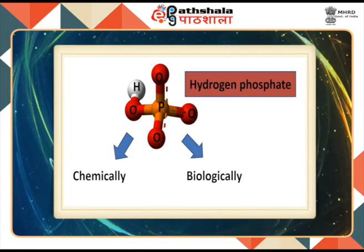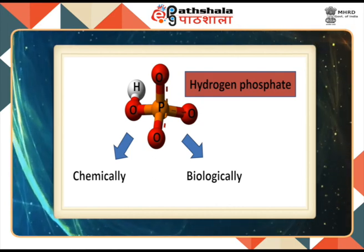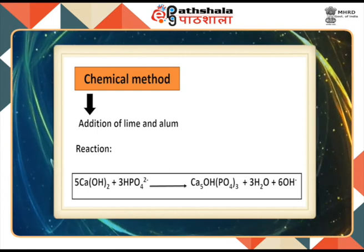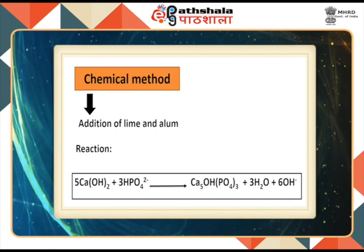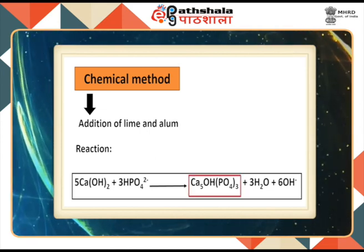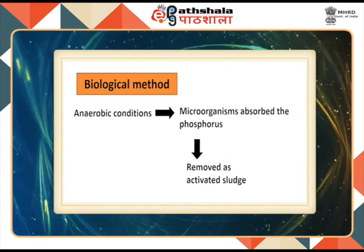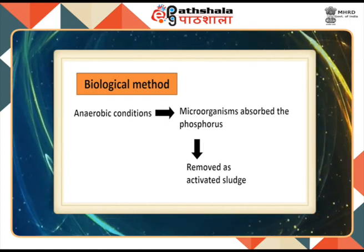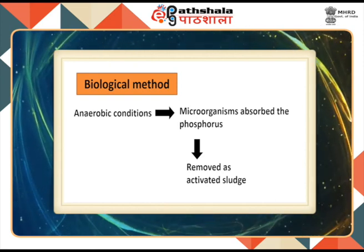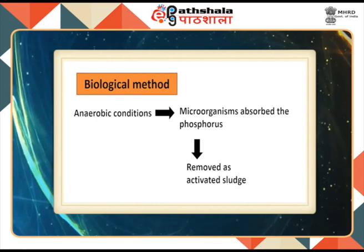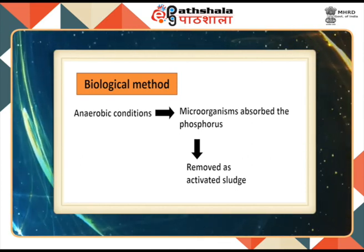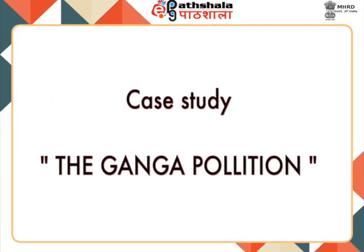Phosphorus in wastewater mainly exists in the form of hydrogen phosphate. It can be removed chemically and biologically. The chemical method for removal of phosphorus involves the addition of lime and alum. In this process, calcium hydroxide combines with phosphate in alkaline medium to form calcium hydroxyapatite, which is insoluble in water and is therefore precipitated out. In the biological method, the sludge from sedimentation tanks is subjected to anaerobic conditions where microorganisms assimilate organic matter as well as phosphorus at a very high rate. Once the microorganisms have absorbed the phosphorus, they are removed as waste activated sludge, thus carrying with them high concentrations of phosphorus.